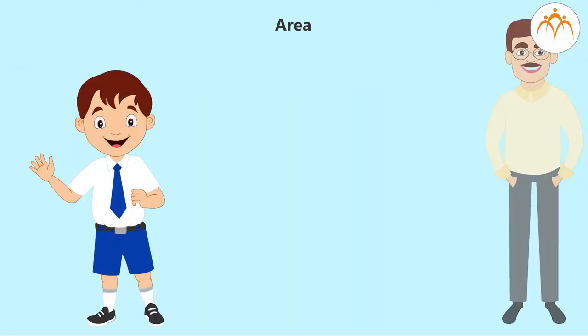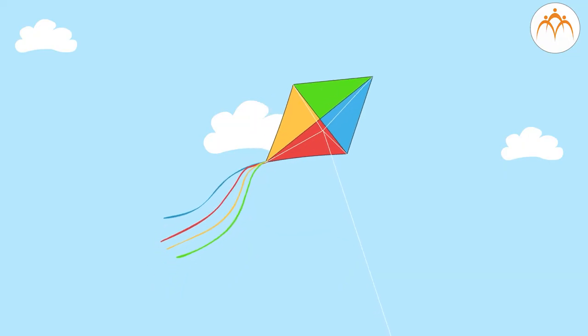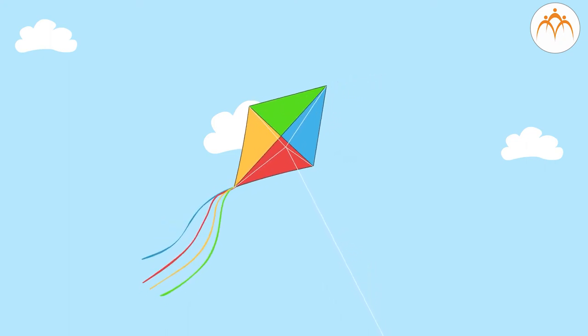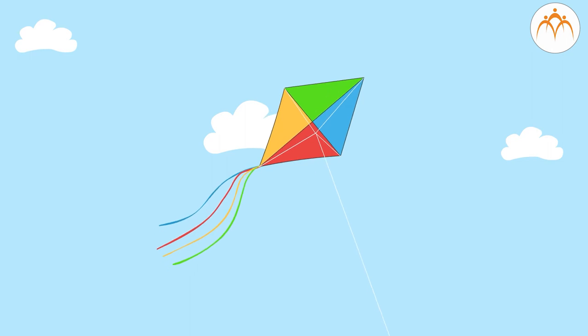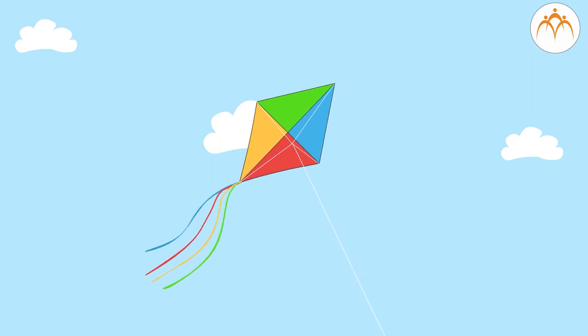Somu asked sir the other day, I saw a kite flying. Can we find its area? Yes, we can. However, let us find the area of a kite with all sides equal, that is a rhombus.